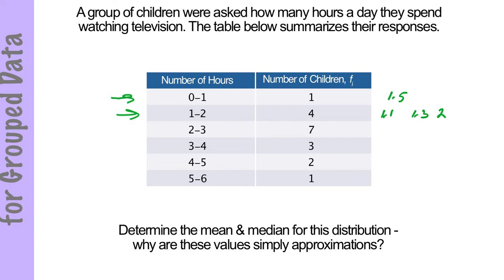So if we determine the mean and the median for this distribution, why are these values going to be simply approximations? The reason they're simply going to be approximations is because it's grouped, so we don't use exact values. We use grouped values.